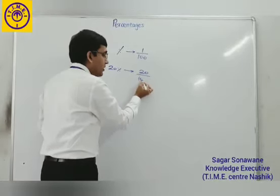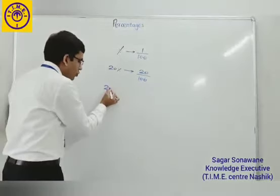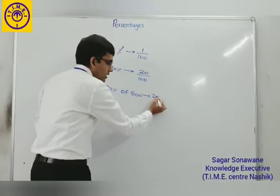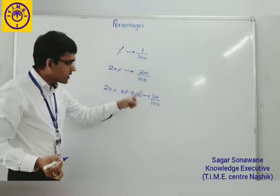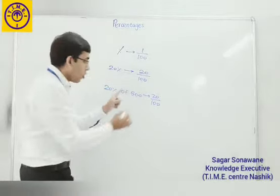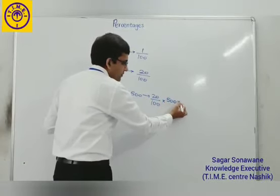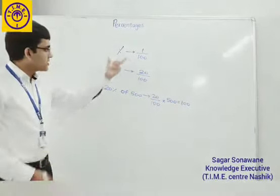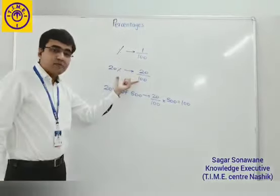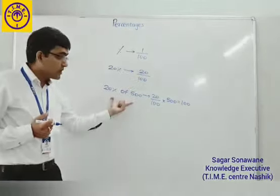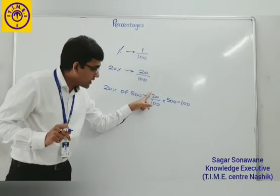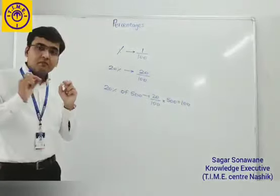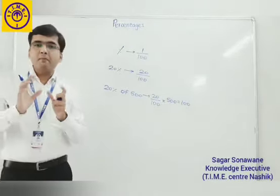If you write 20 percent, it means twenty by hundred. Twenty percent means twenty by hundred. And twenty percent of five hundred, which is talking about twenty by hundred into five hundred. That is hundred.